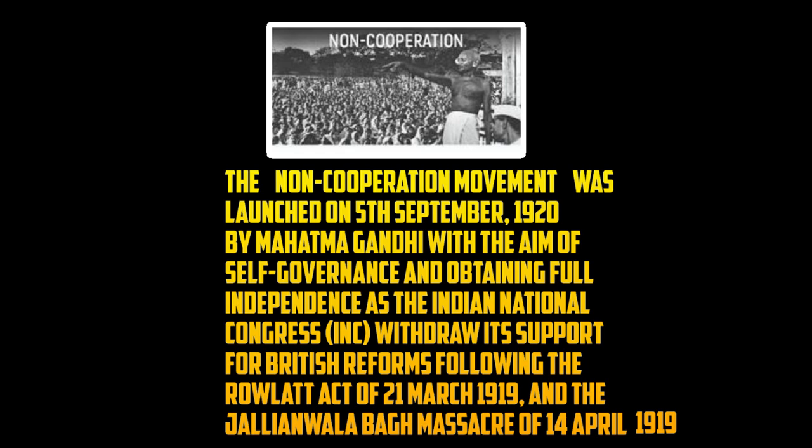The non-cooperation movement was launched to provide self-governance and obtain full independence, as the Indian National Congress withdrew its support from British reform. This followed the Rowlatt Act and the Jallianwala Bagh Massacre which took place on 13th April 1919. The Congress party, headed by Lala Lajpat Rai, combined support for the non-cooperation movement. The movement was organized on the basis of two programs — positive and negative programs.